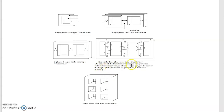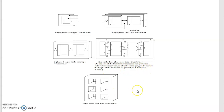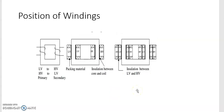It is very difficult to carry from a transmission point of view by rail and road. Difficulty arises because of transportation; to reduce the height of the transformer, generally a 5-limb core is used.